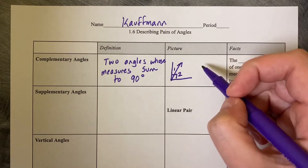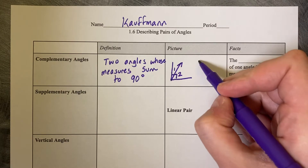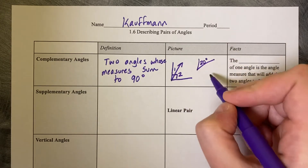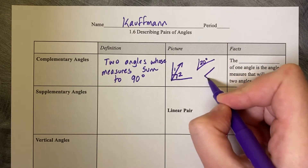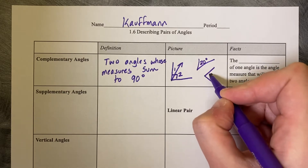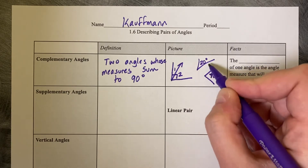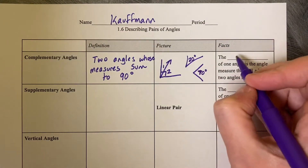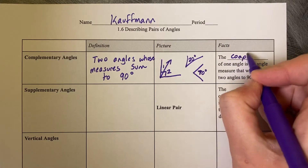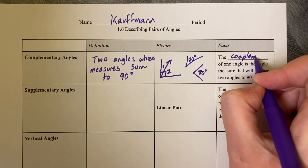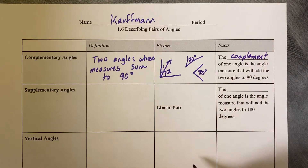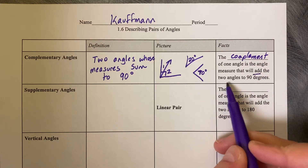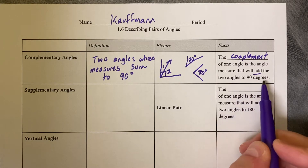It's also possible that the angles are separated. You could have one angle over here at 20 degrees and one angle over here at 70 degrees, and these two together are complementary. The complement of one angle is the angle measure that will add the two angles to 90 degrees.